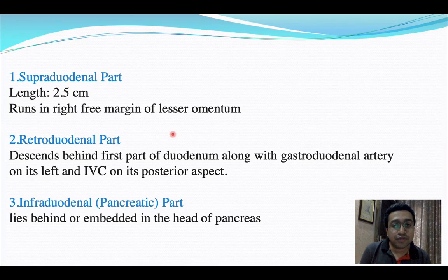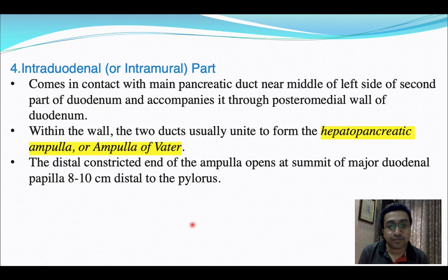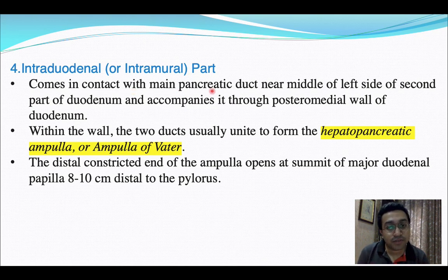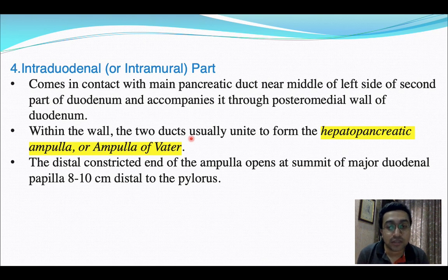The supraduodenal part is 2.5 centimeters in length and runs in the right free margin of the lesser omentum. The retroduodenal part descends behind the first part of the duodenum, with the gastroduodenal artery on its left and the IVC on its posterior aspect. The infraduodenal or pancreatic part lies behind or is embedded in the head of the pancreas. The intraduodenal or intramural part comes in contact with the main pancreatic duct near the middle of the left side of the second part of the duodenum, and within the wall the two ducts usually unite to form the hepatopancreatic ampulla, or the ampulla of Vater.